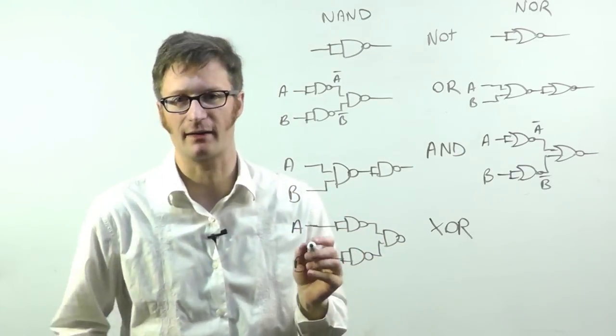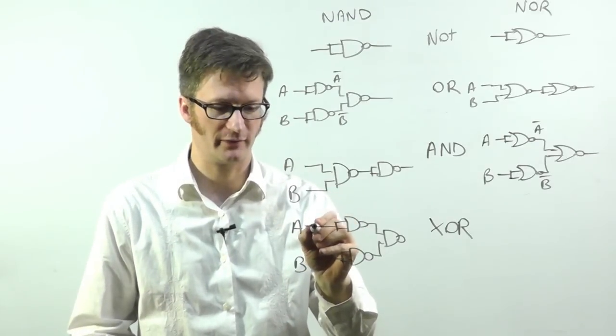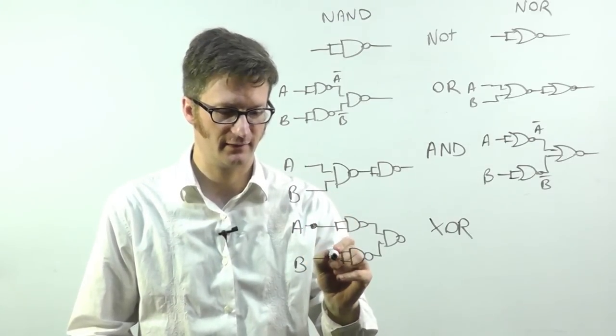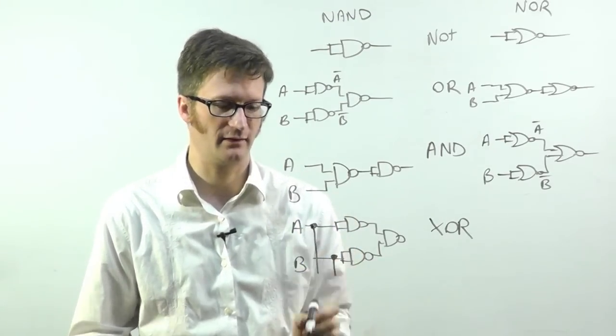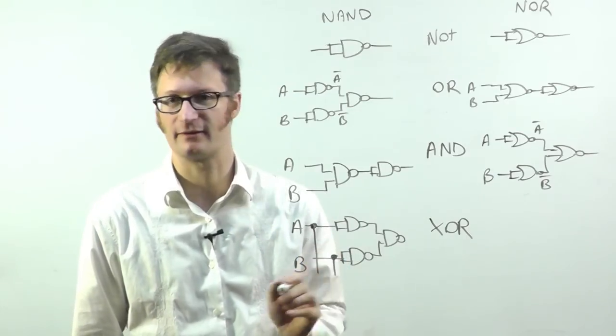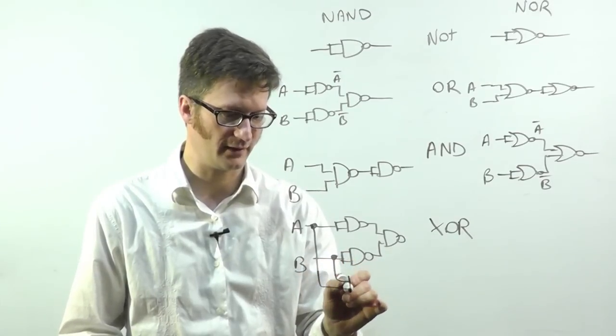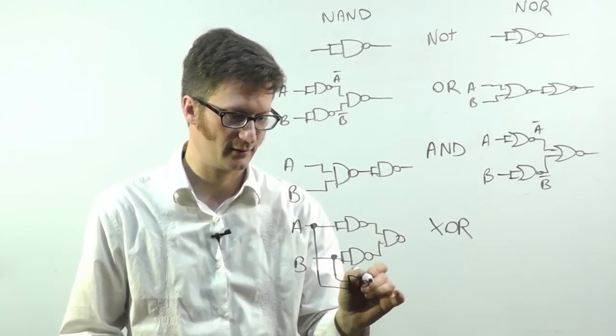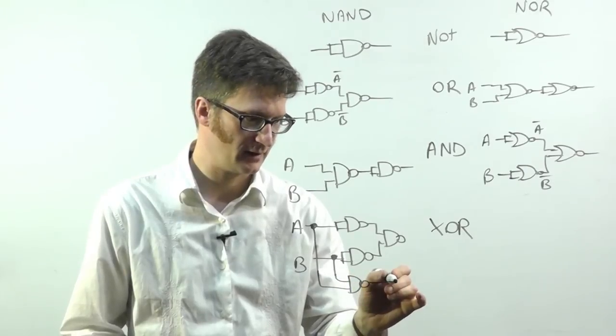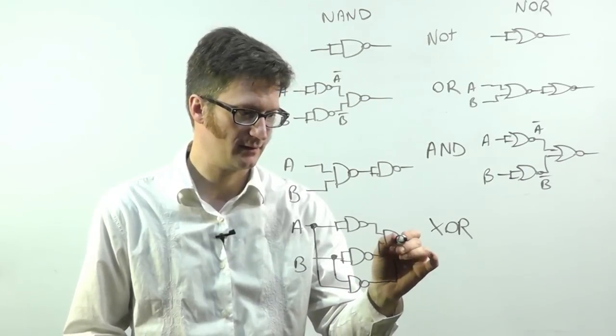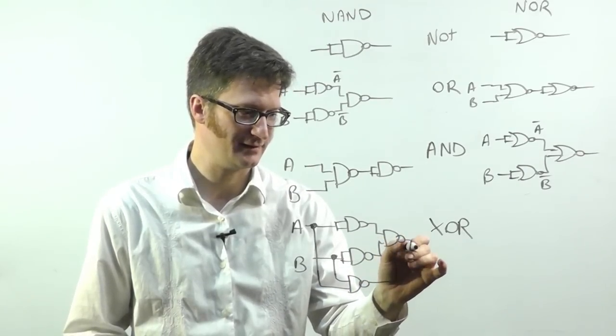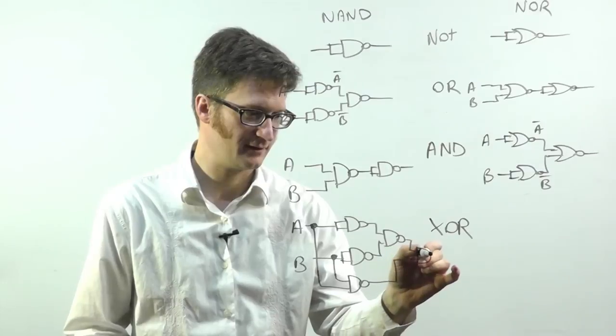Then we branch off. And if you're not familiar with schematics, when you have a little circle like this, it means that there's a connection of a wire. And when they just cross, there's no connection. So we run that into a NOR or a NAND.